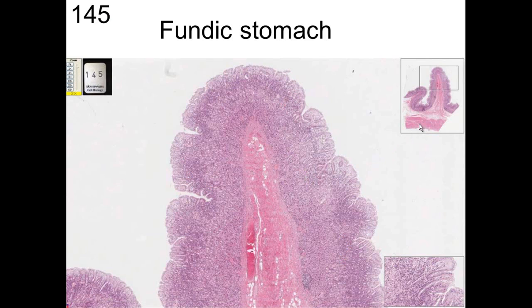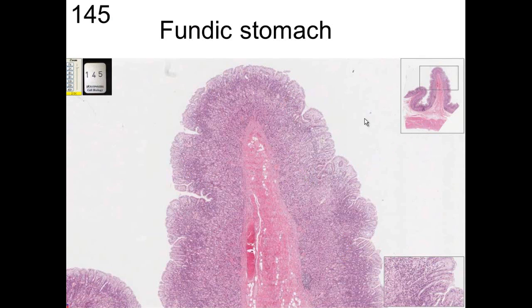Looking at a piece of stomach tissue, you can see the muscularis externa, submucosa, and mucosa. The surface is flattened with pits — these look like villi but they are not villi; you do not have villi in the stomach. The gastric glands have a base where cell generation occurs, an isthmus, and a neck region, with surface mucus cells protecting the surface.